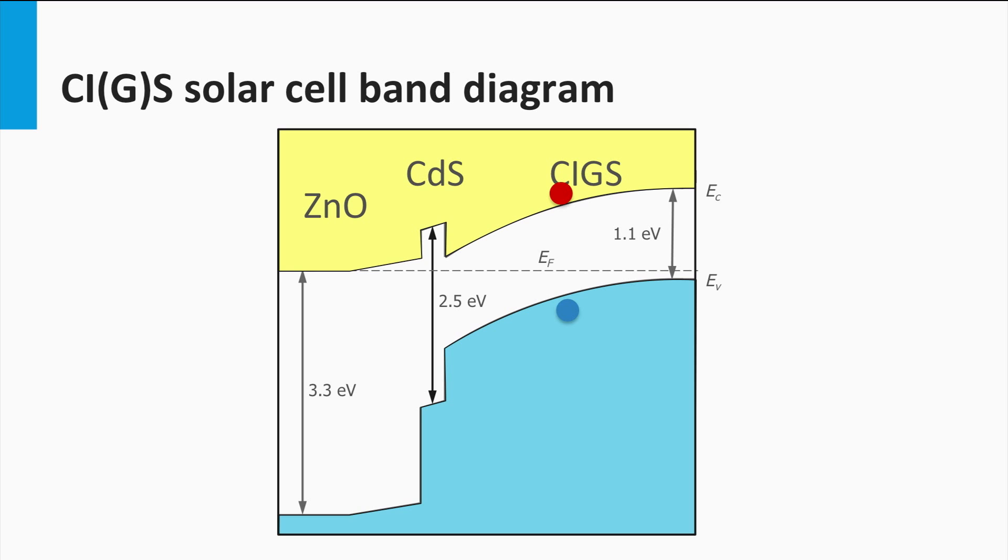The n-type cadmium sulfide buffer layer has a bandgap of 2.5 eV. Since the bandgap of the n- and p-type junction materials are different, this CIGS cell can be considered as a heterojunction.